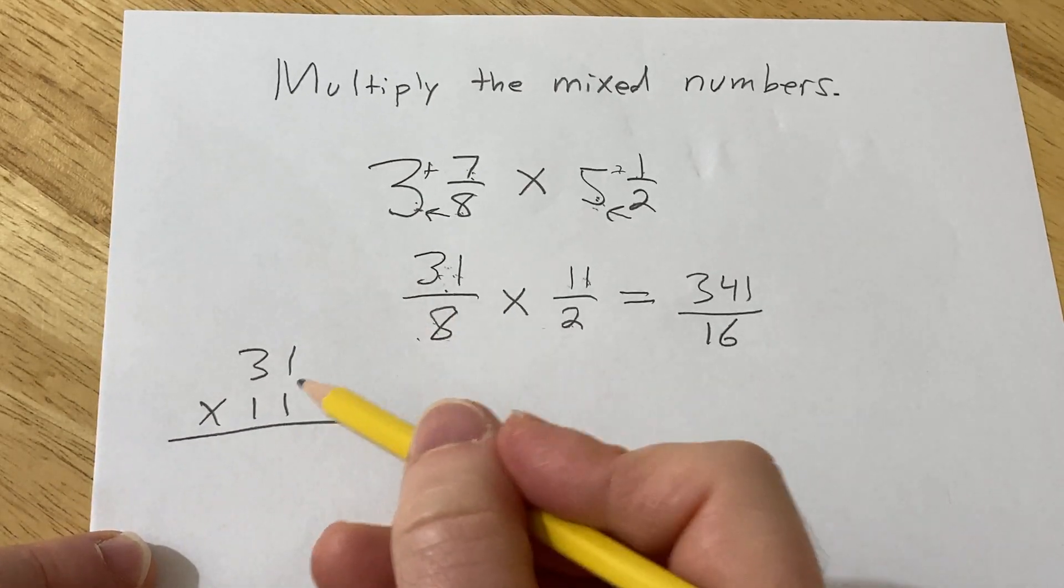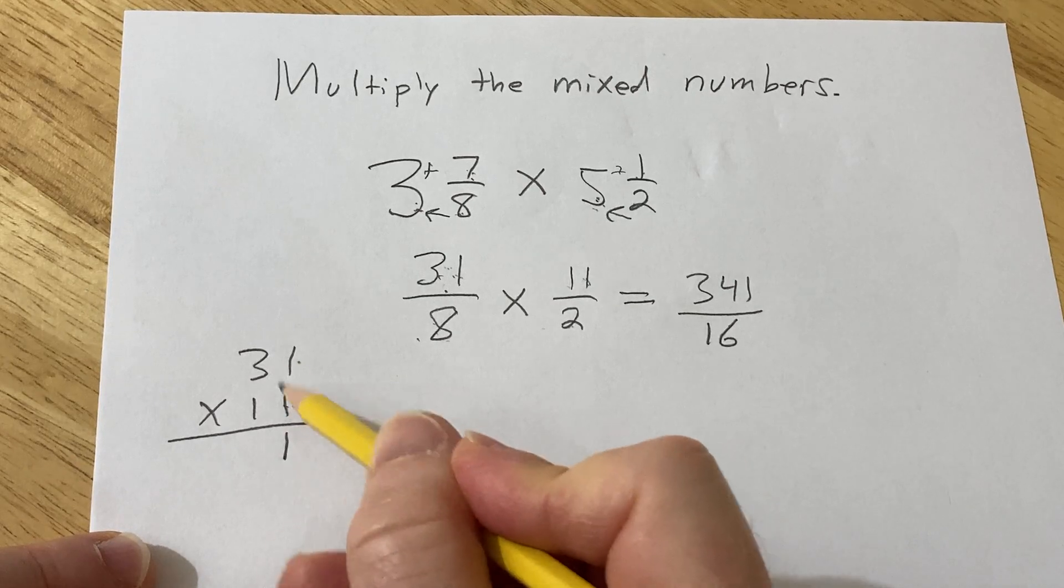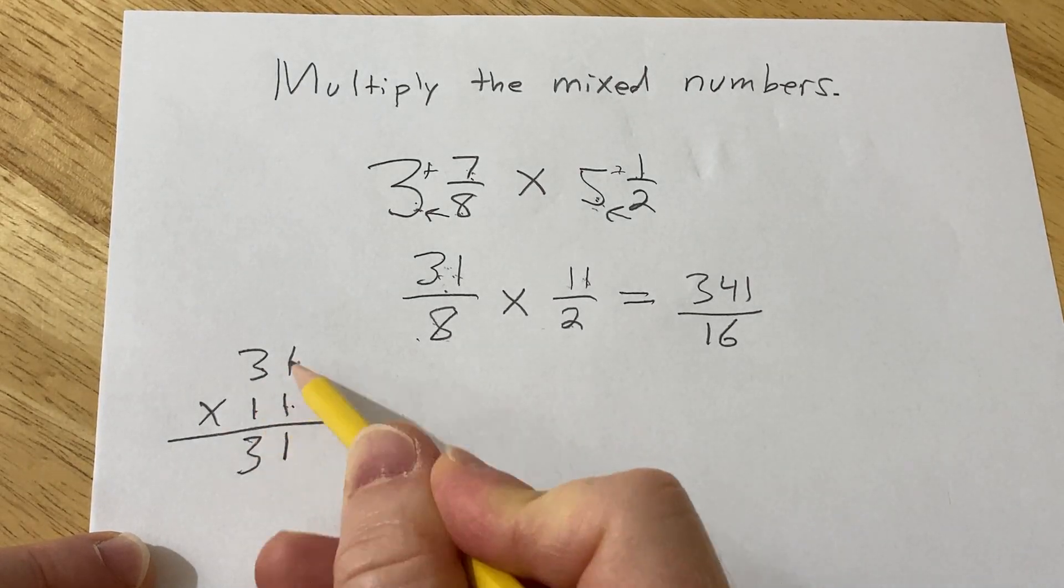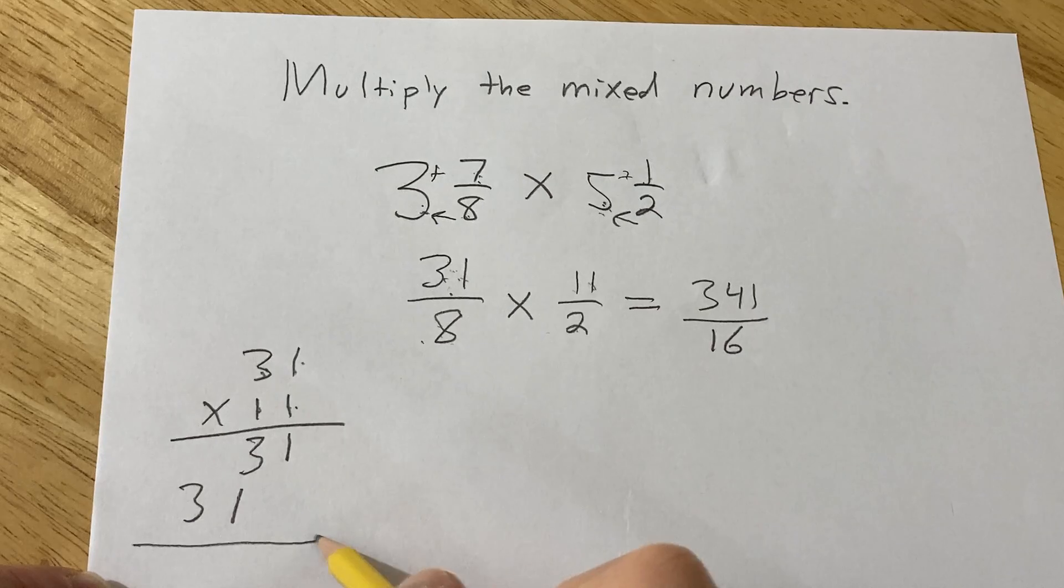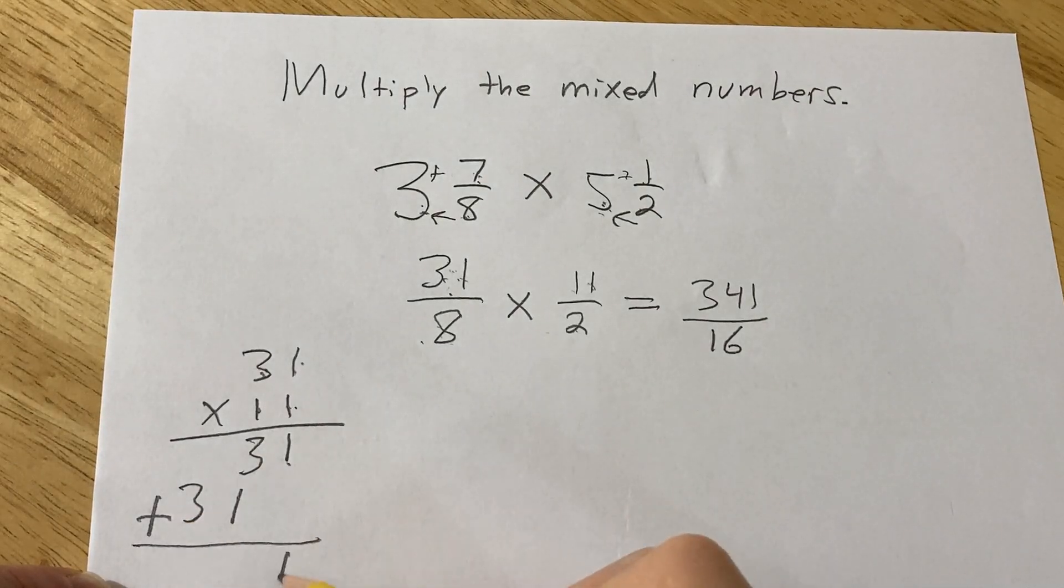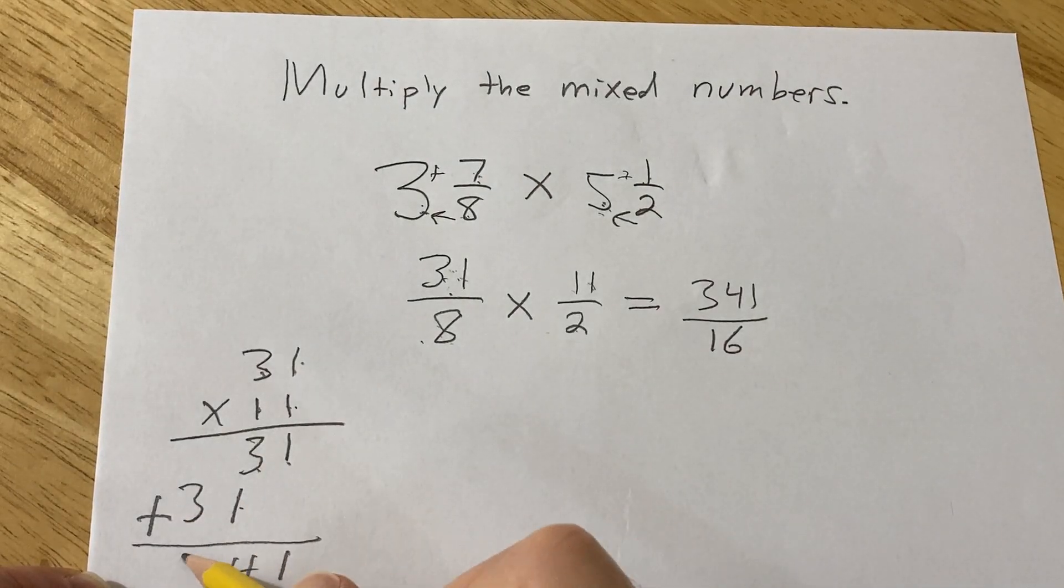So to do it by hand, you do 1 times 1, that's 1. 1 times 3 is 3. 1 times 1 is 1. 1 times 3 is 3. Then you add 1. 3 plus 1 is 4.